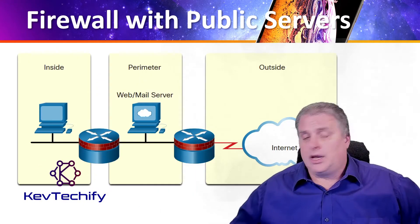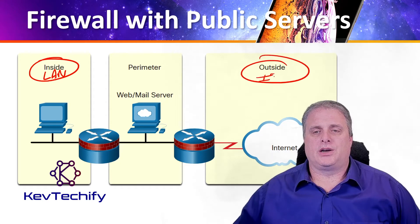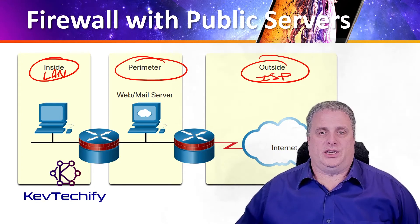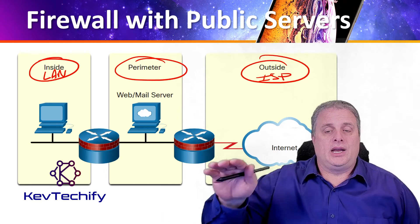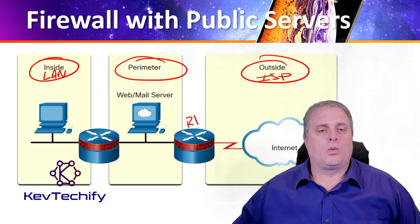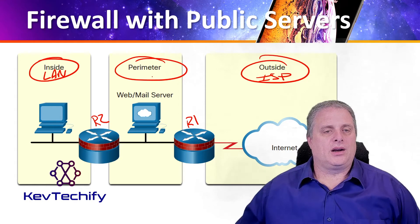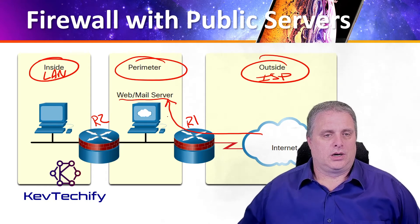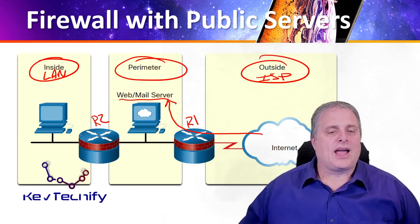Here's another example with three zones again. We have our inside — the local area network — our outside, which is your ISP connection, and our perimeter. This time the perimeter is placed in line with the connection. It's not a separate zone with one router having three connections; you have to go through the first router, R1, to get into the perimeter, and then through R2 to get to your company. The perimeter houses the mail and web server, since people from the internet need access to those but you don't want to put them all the way into your LAN.